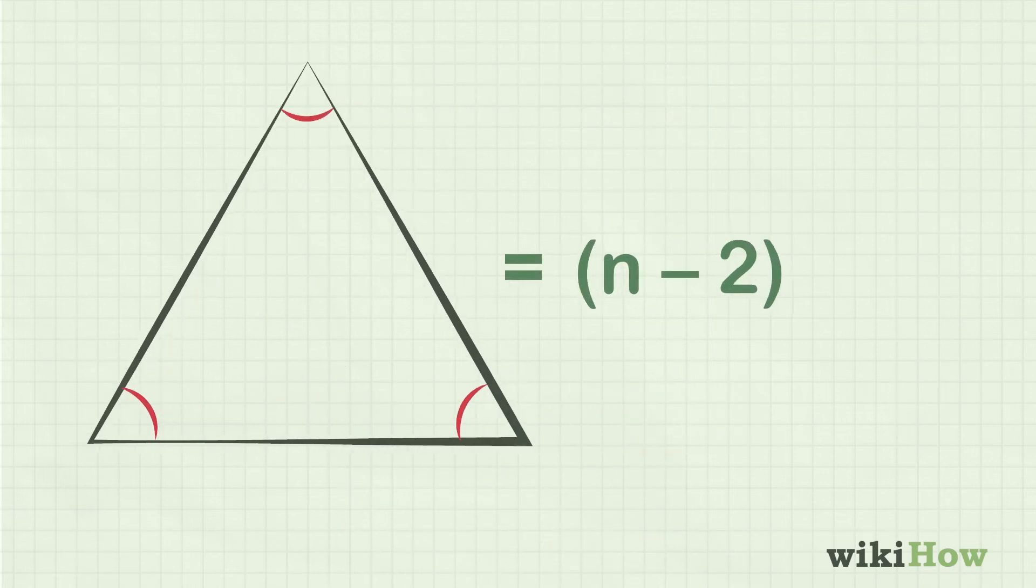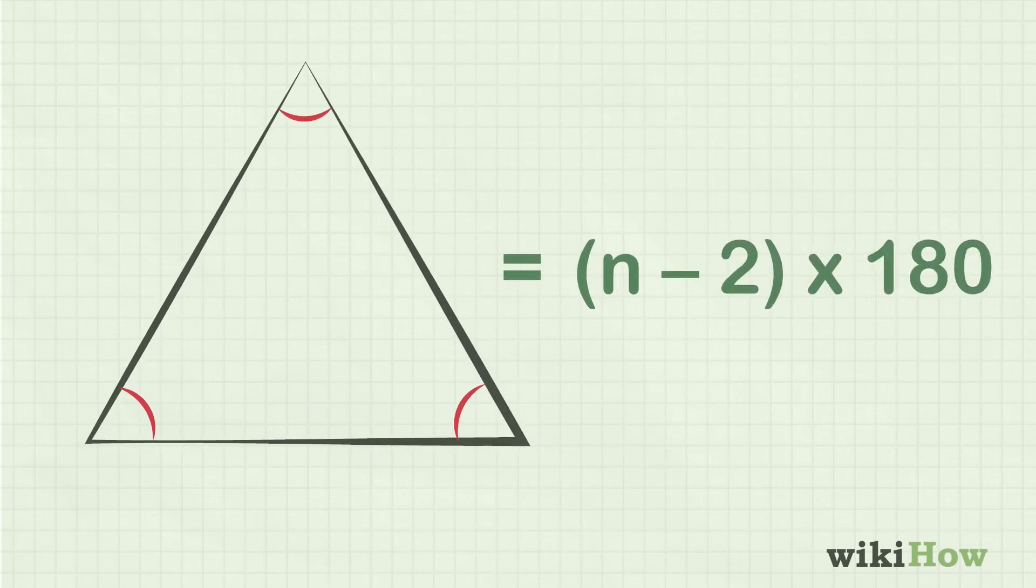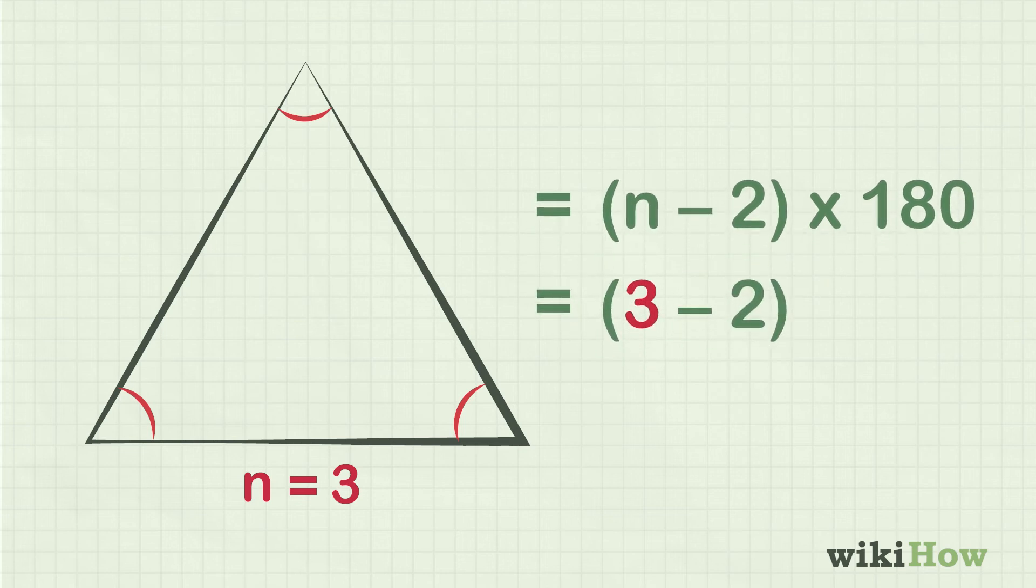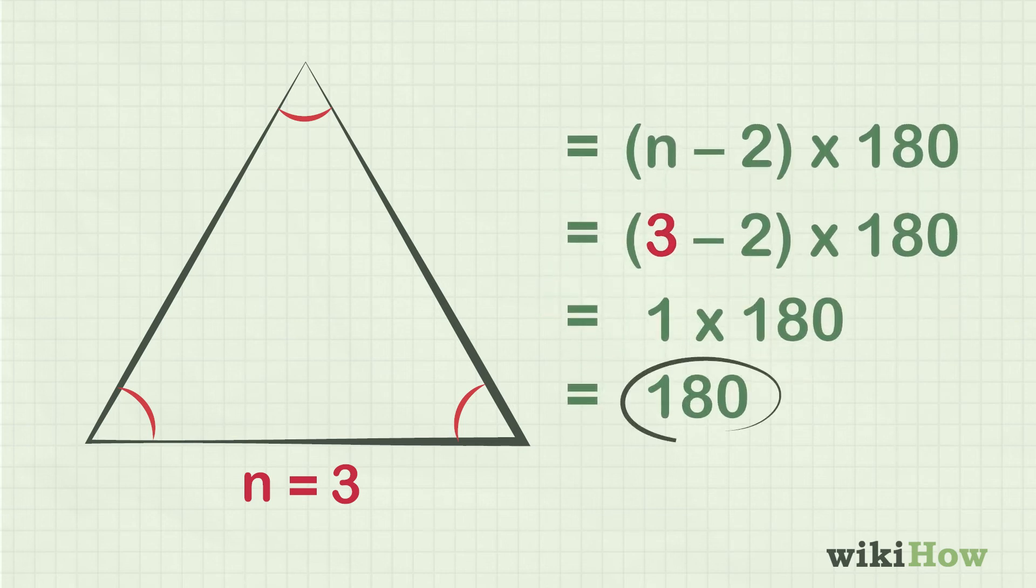Next, use the formula n-2 times 180 to find the total number of degrees of all the interior angles combined. In this formula, n is equal to the number of interior angles, so a triangle would have 3-2 times 180 degrees, or 180 degrees total.